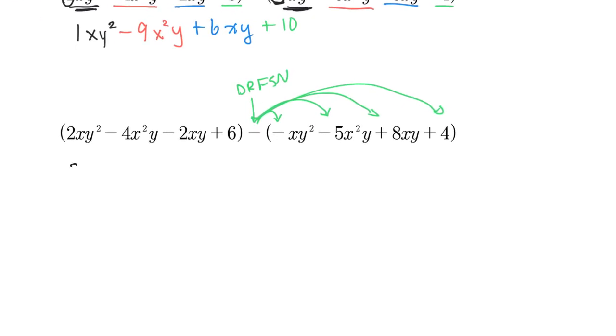So first, let's drop the brackets. So 2xy squared minus 4x squared y minus 2xy. This one stays the same. But then this next one will become a positive xy squared, a positive 5x squared y, a negative 8xy, and a negative 4. Now I can collect like terms.